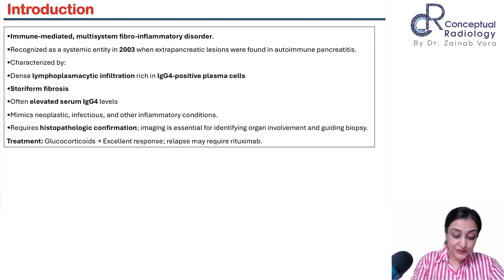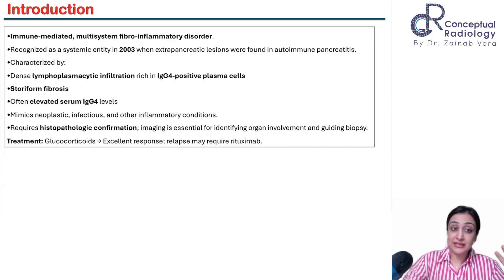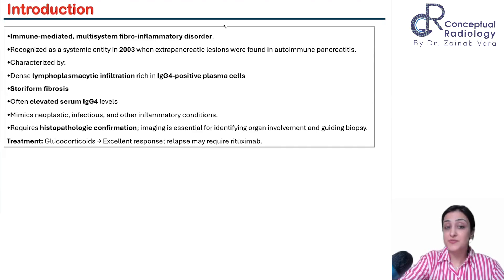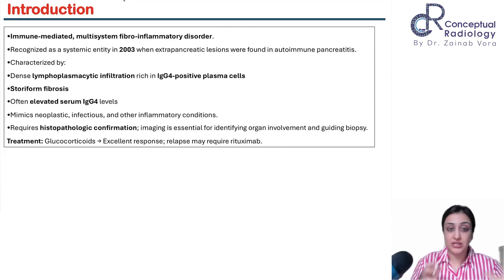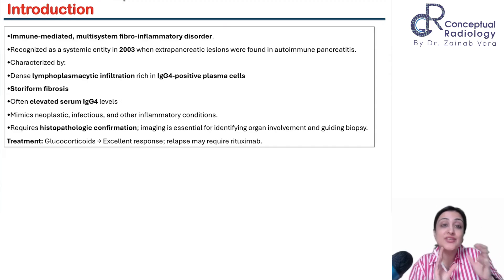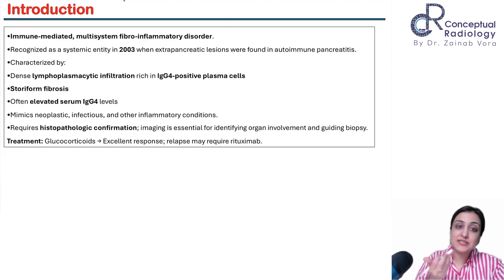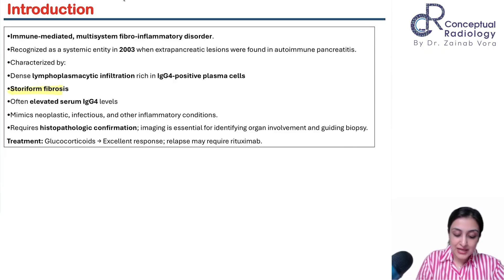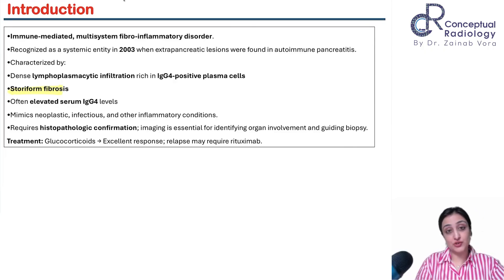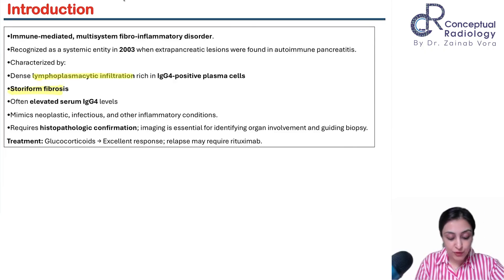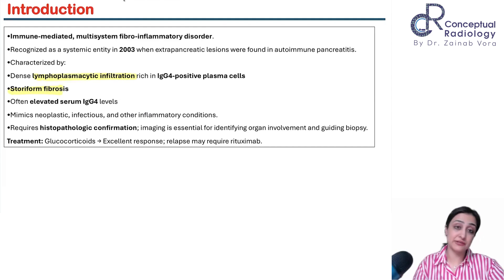That entity is an immunological disorder affecting multiple systems, essentially involving fibrosis and inflammation. We have fibrosis — called storiform fibrosis pathologically, known as the basket weave pattern — and inflammation in the form of lymphoplasmacytic infiltration.